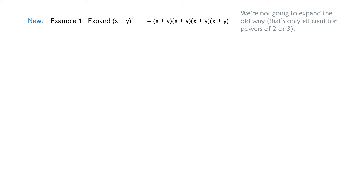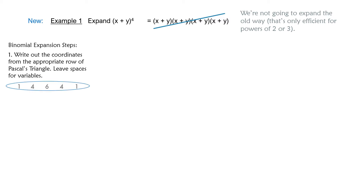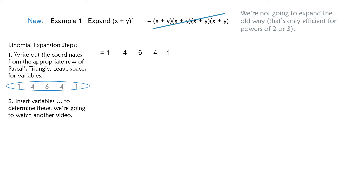Here are our binomial expansion steps. Step one is to write out the coefficients from your triangle, leaving space for variables because we need x's and y's. Let's get these coefficients spread out here. Now we need the variables, and to figure this out we're going to watch another video — it's kind of an older retired teacher who just decided to start making videos, and he seems to really love his job.